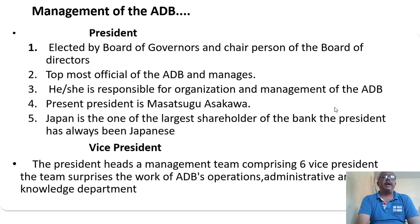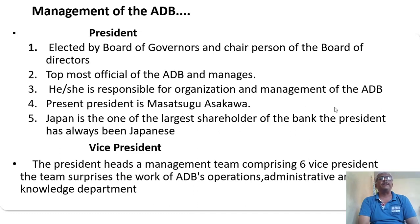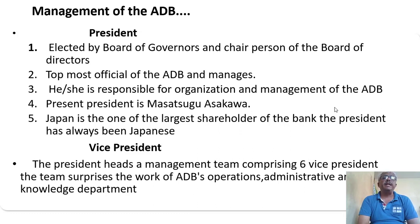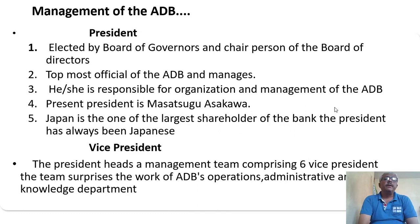The President is elected by the Board of Governors and serves as chairperson of the Board of Directors and the topmost official of ADB. He or she manages the entire business and is responsible for the organization and management of ADB. The current president is Asakawa. Japan is one of the largest shareholders of this bank, and therefore the president of the ADB has always been Japanese.